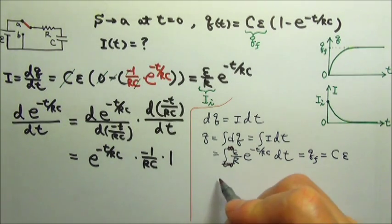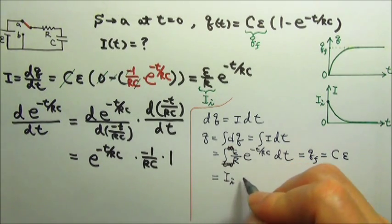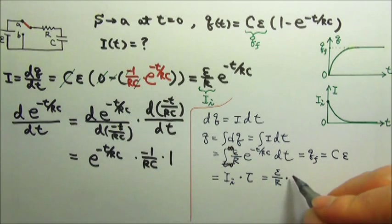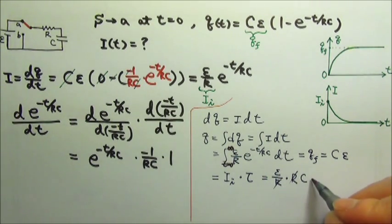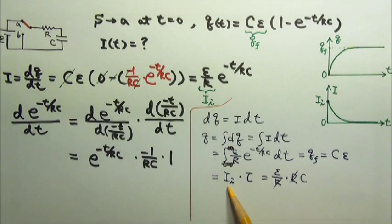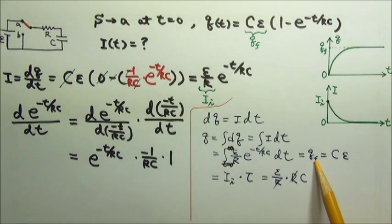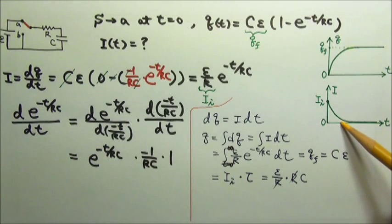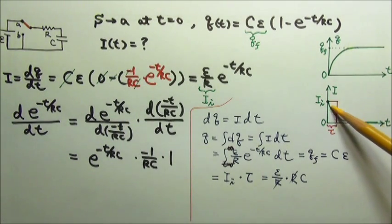This final charge C times E is also the initial current times the time constant: the initial current E over R times the time constant RC — the R's cancel and we get C times E. So this is another special thing about the time constant: if the current stays at the initial value for one time constant RC, the total charge going by would equal the final charge on the capacitor. We can also say that charge is the area under the current vs. time graph, meaning the total area under the curve equals the area of a rectangle with height equal to the initial current and width equal to one time constant.